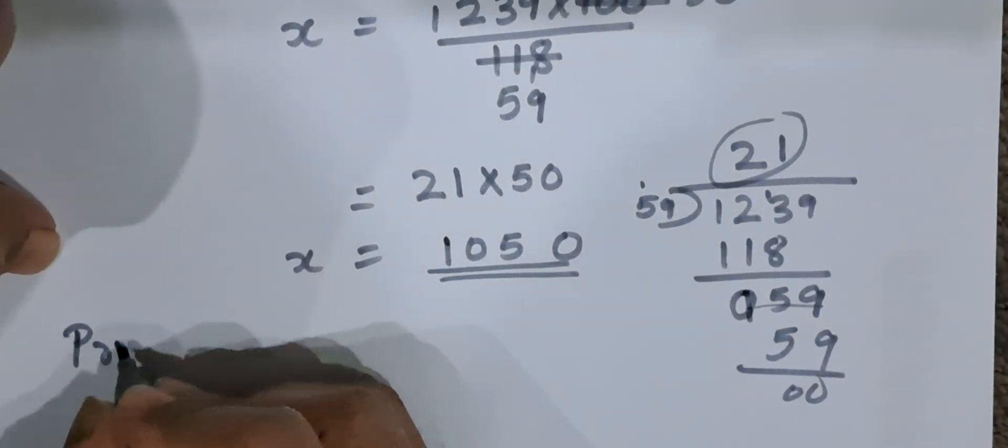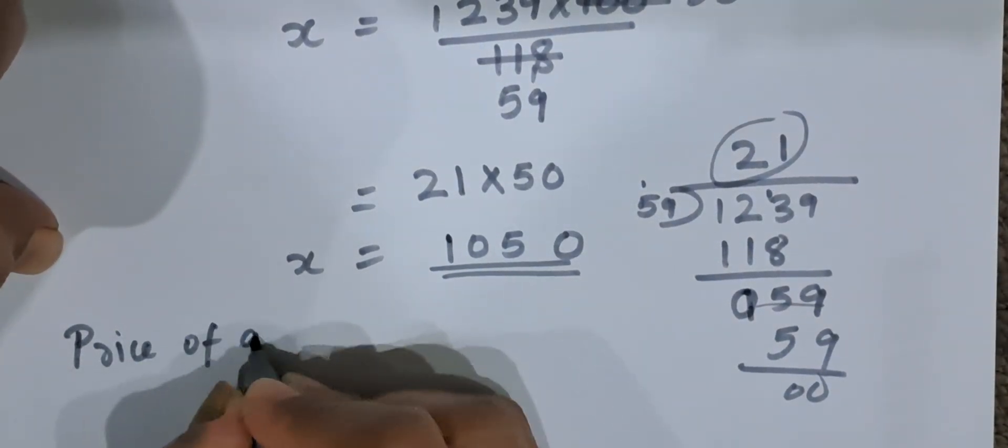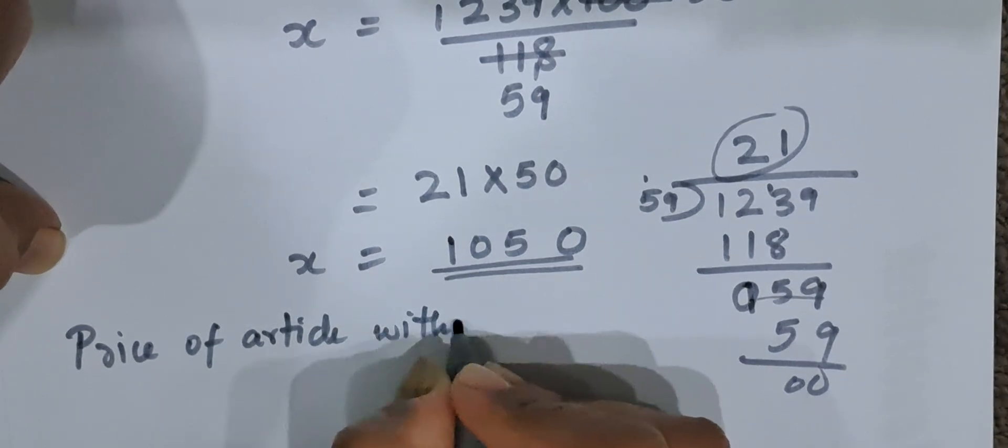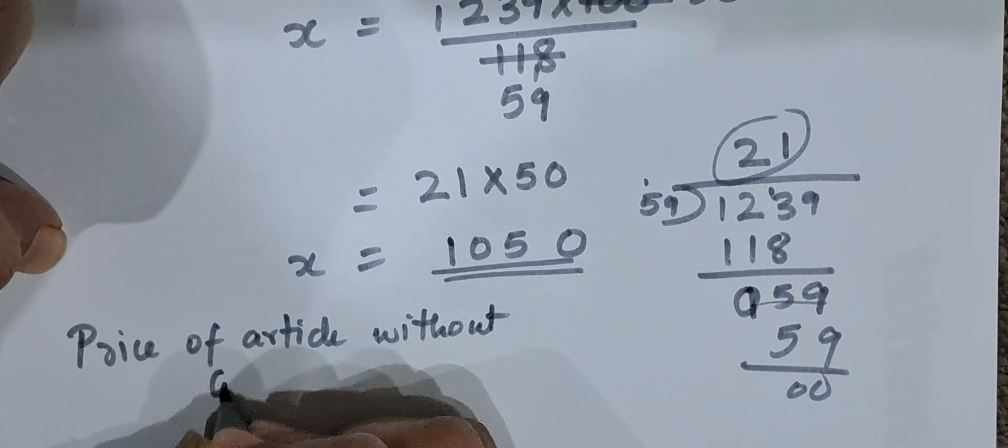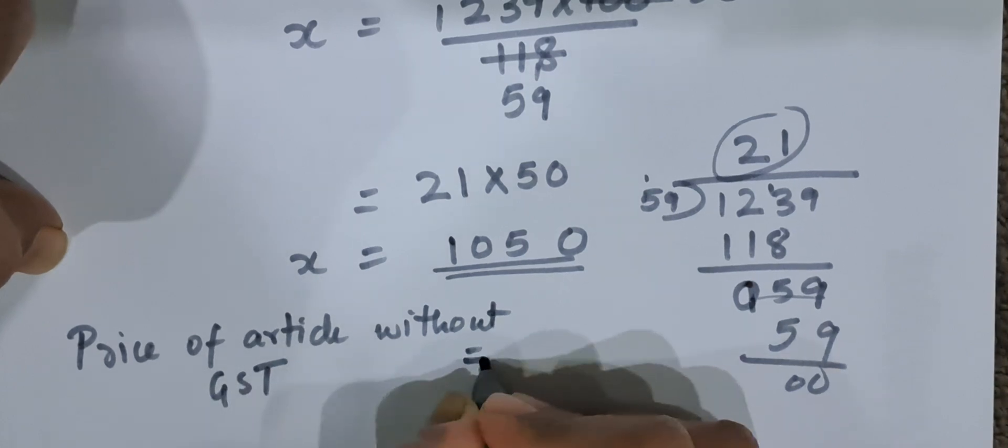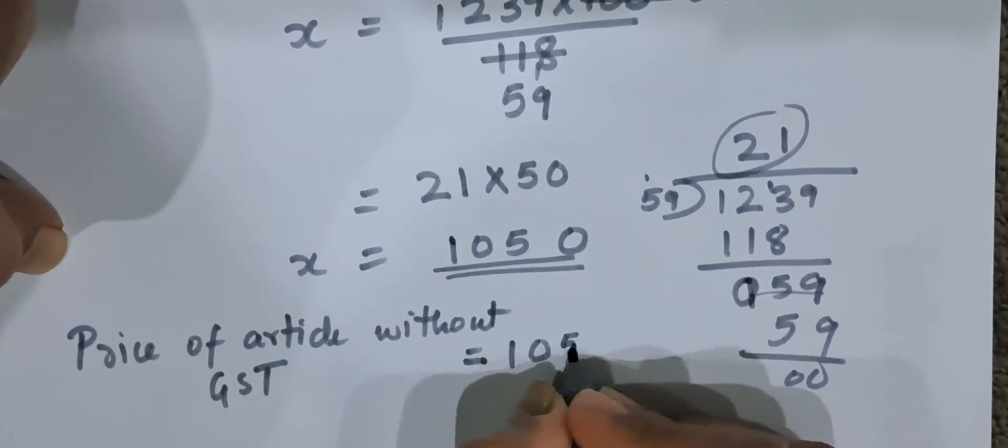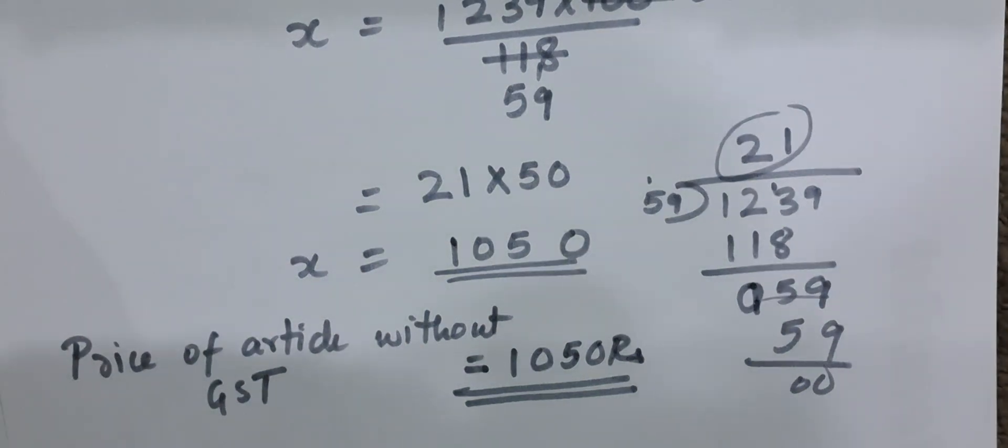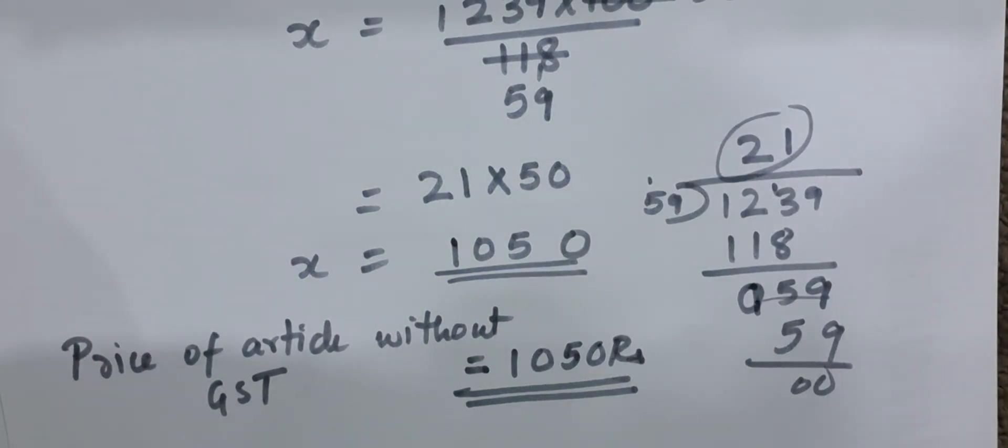Let us write it down. Price of the article without GST is equal to 1050 rupees. This is the answer. If you found this video helpful, please like and subscribe my channel. Thank you.